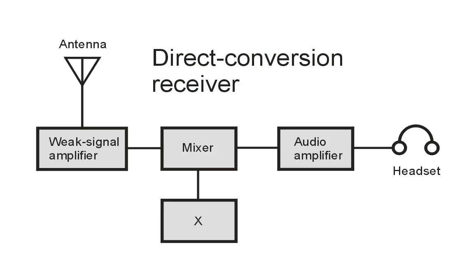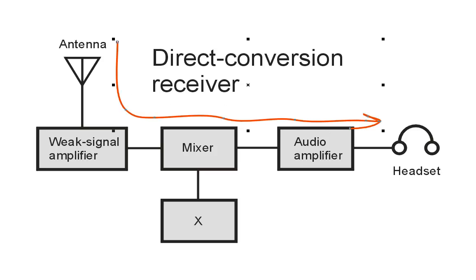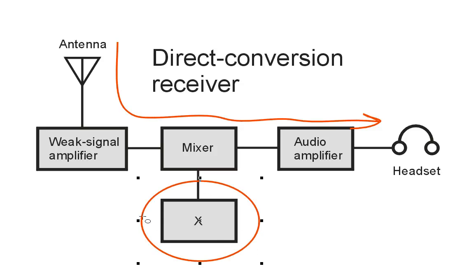A direct conversion receiver takes a signal from the antenna, it passes through a weak signal amplifier, a mixer, and then an audio amplifier. The mixer actually serves as the detector in this receiver, but we also need something else — this thing marked X. The question is asking us what is this thing that we need to put a signal into the mixer, along with the weak signal amplifier, in order to get the output that we want.